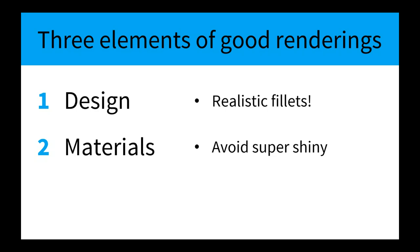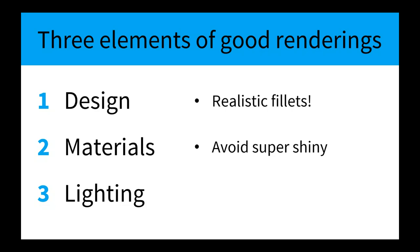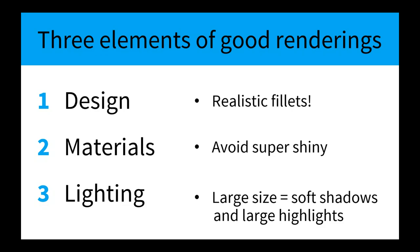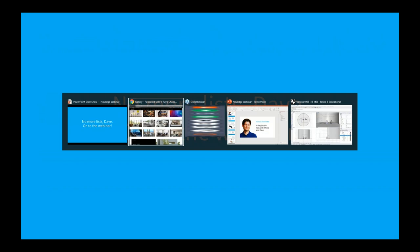Lighting can be the trickiest part to get right. Design, materials, and lighting are all three about equally important. We're going to use large rectangular lights — that's all I need. There are probably five or six different light types inside V-Ray, but we just need one kind and we can get away with one or two. The large size gives us not only soft shadows but also large highlights that flow around the surface and really define the form.